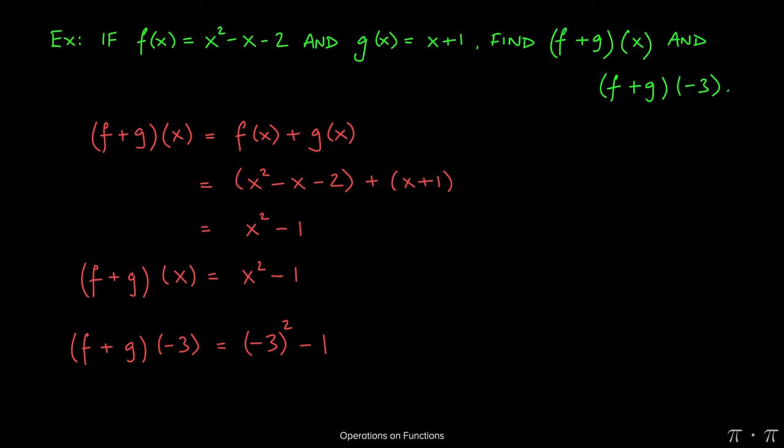And it gives us negative 3, the quantity squared, minus 1. Negative 3 squared is 9, 9 minus 1 gives us 8.